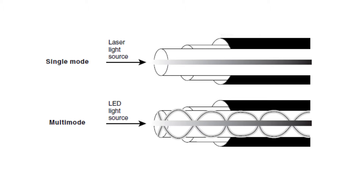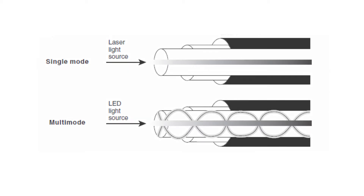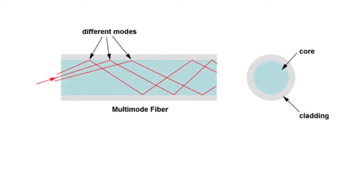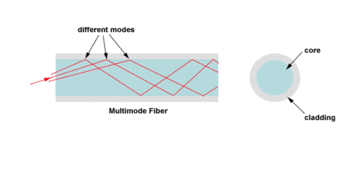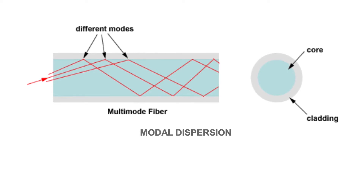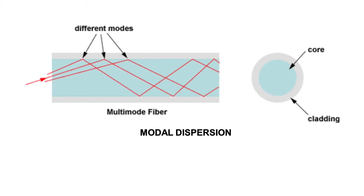A mode is a ray of light that enters the fiber at a particular angle. Multi-mode fiber uses LED as the light-generating device, while single-mode fiber generally uses lasers. Multi-mode fiber allows multiple modes of light to propagate through the fiber. Because these modes of light enter the fiber at different angles, they will arrive at the end of the fiber at different times. This characteristic is known as modal dispersion.